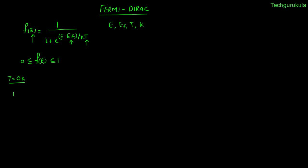At T = 0 Kelvin, let us find f(E) for the first case where E is greater than EF. The value would be 1 / (1 + e^((E - EF) / kT)). Since E > EF, the exponent is positive, and with T = 0, we get 1 / (1 + e^(+∞)), which equals 0.